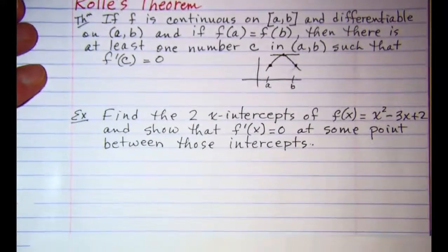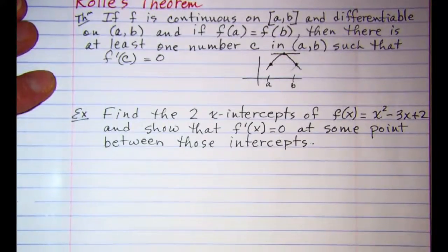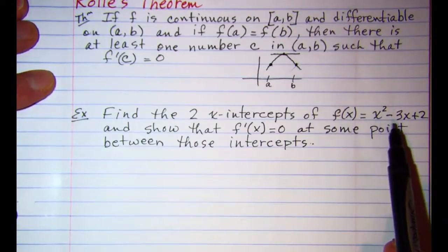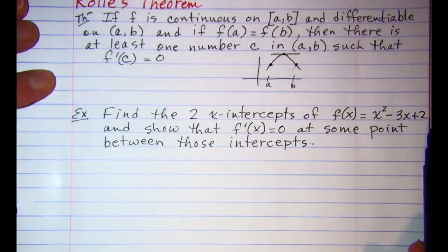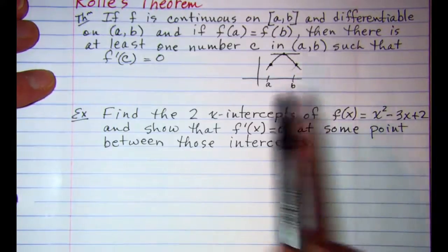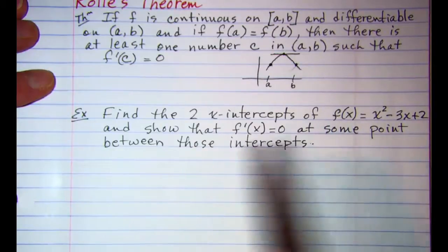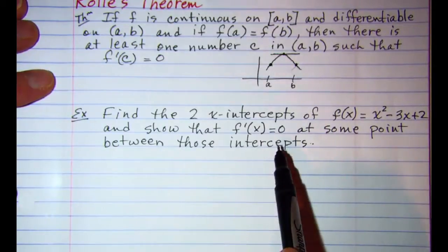So in our first example we're asked to find the two x-intercepts of the function f of x equals x squared minus 3x plus 2 and then show that the derivative is equal to 0 at some point between those intercepts.